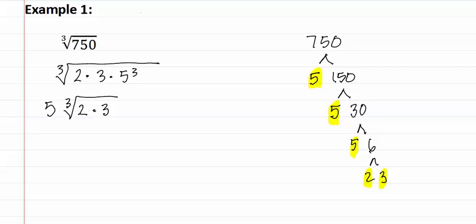This means we have five cubed root of two times three. We need to multiply the factors that are remaining back together. This means we have a six underneath the radical, and a five outside. This is your final answer.